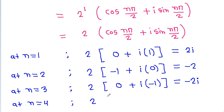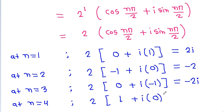At n equal to 4, it is 2 times [cos(2π) plus iota times sin(2π)]. Since cos(2π) is 1 and sin(2π) is 0, that gives 2.